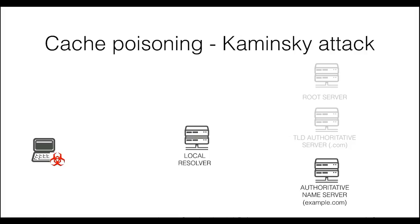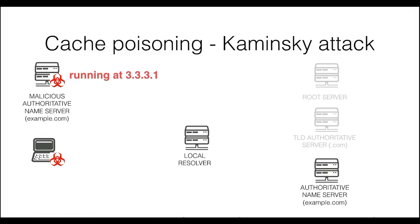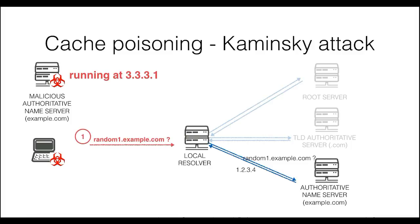This version of cache poisoning attacks was discovered in 2008 by Dan Kaminski, and it is considered one of the biggest vulnerabilities in DNS seen so far. This attack requires more preparation from the attacker's side, but the gain makes it worth it. Let's assume the attacker has set up an authoritative name server for the target domain. This is allowed in DNS, because if everything works correctly, queries for example.com will be asked only to the legitimate authoritative name server. As in the previous version, the attacker prompts the resolution process — however, this time for a random subdomain of example.com. This has two advantages.